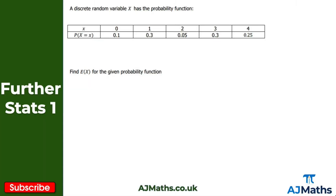In this video, we're going to take a look at finding the expected value of a discrete random variable. What do we mean by the expected value? Well, this is essentially just the mean of our discrete random variable. The notation we use is E of x, which represents the expectation of our random variable x.